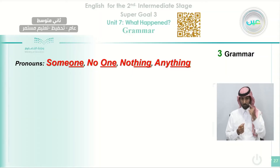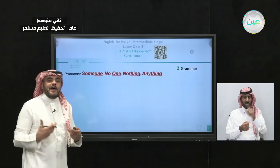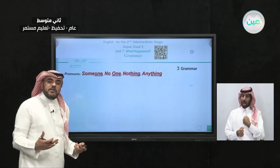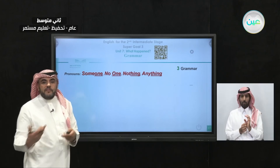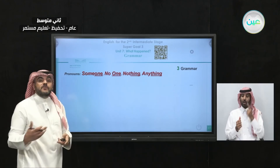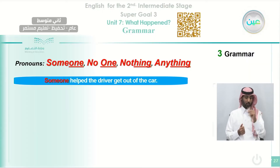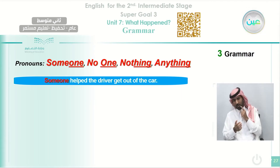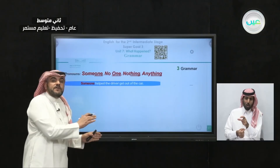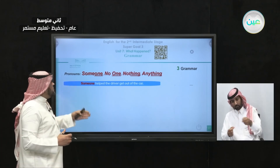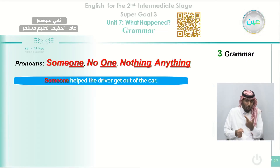Also, we have this part of grammar: someone, no one, nothing, and anything. We consider these as pronouns — like I, he, she, it, we, you, they — but here we use them to refer to things or people in our speech. For example: 'Someone helped the driver get out of the car.' We use 'someone' when we don't specify a particular person — it refers the action to someone that we don't know.